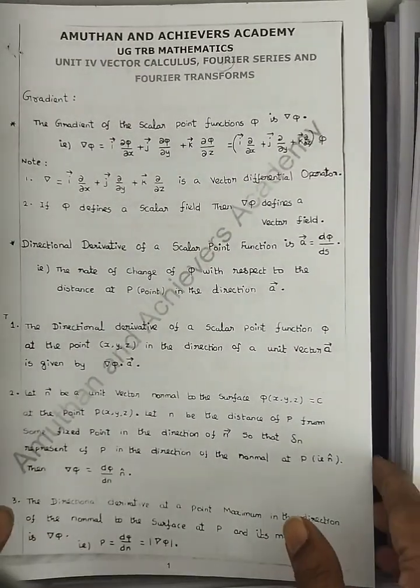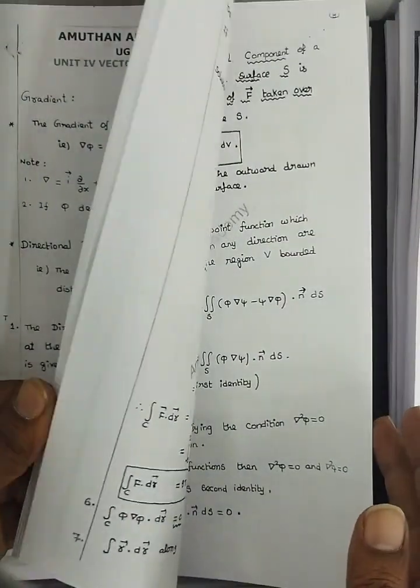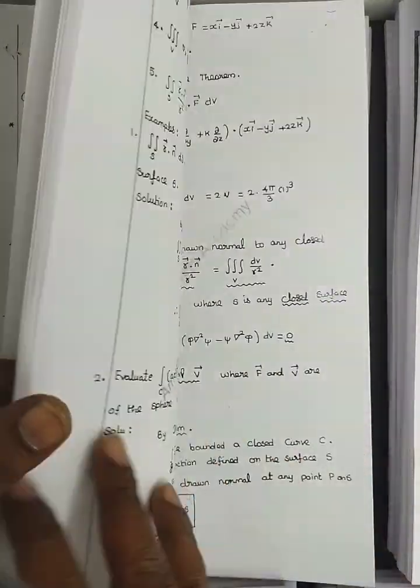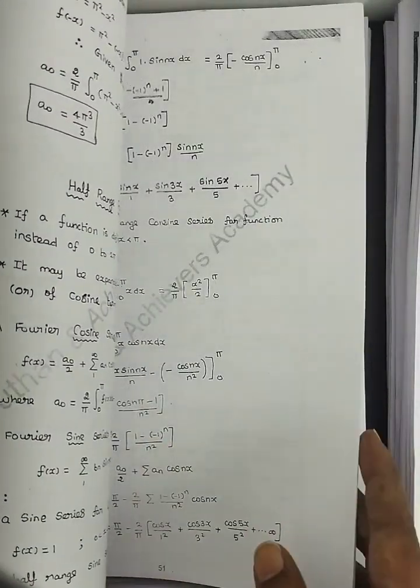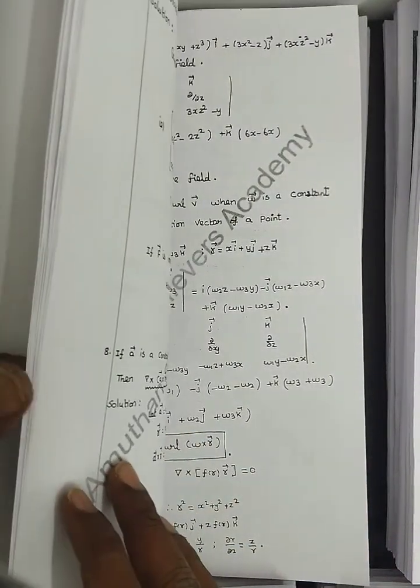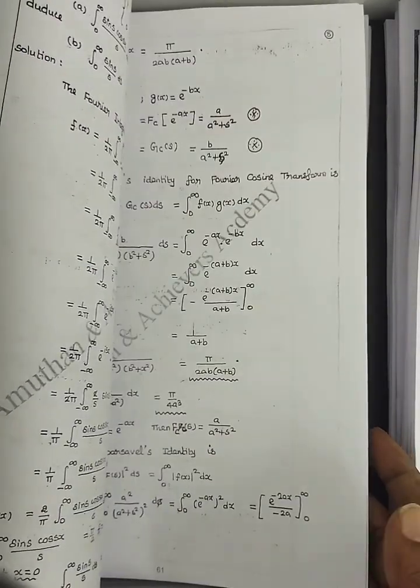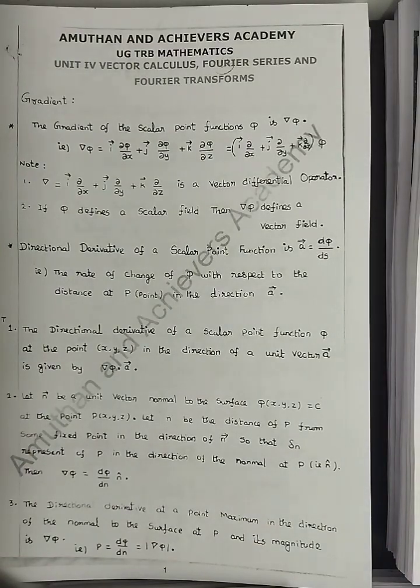Vector calculus, Fourier series, Fourier transform. Vector calculus covers vector differentiation, integration, gradient, divergence, Gauss theorem, Stokes theorem, Green's theorem, based on integrals zero to 2π, zero to 2L, odd-even functions, half-range sine-cosine. Fourier transform: Fourier sine, cosine, convolution theorem, and Parseval's identity.